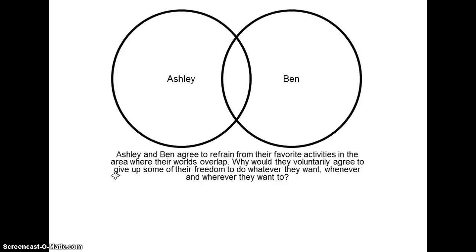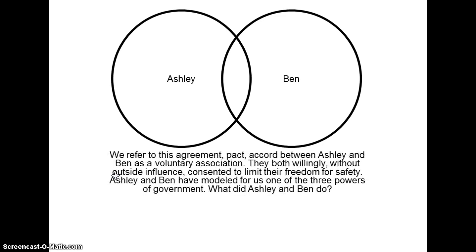Why would they voluntarily agree to give up their freedom to do whatever they want, whenever and wherever they want to? Because in return they get safety — in government terms, we call this ensuring domestic tranquility. We refer to this pact, this agreement, this contract between Ashley and Ben as a voluntary association. They both willingly, without outside influence, consented to limit their freedom, and in return they received safety. Ashley and Ben have modeled for us one of the three powers of government: they made a law.